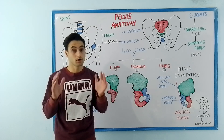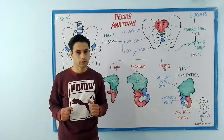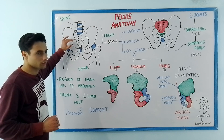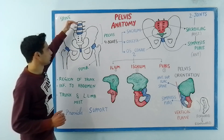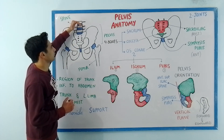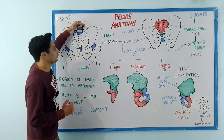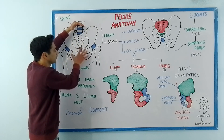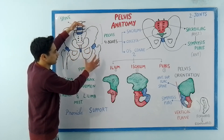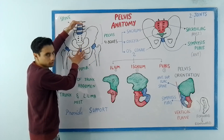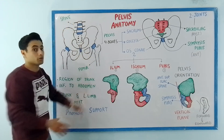The question arises: what exactly is the pelvis? Have a look — it's the region of the trunk which is inferior to your abdomen. For example, we have the abdomen somewhere right here, so it is the region of the trunk which is inferior to the abdomen, where your lower limbs will meet the trunk.